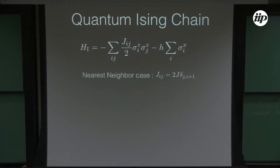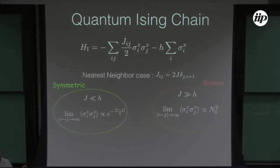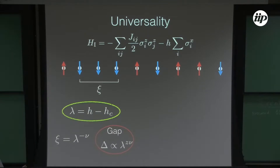The system I'm going to treat with this technique is the quantum Ising chain — a transverse-field Ising model with quantum spins, which is a Pauli matrix. It has two phases: a symmetric phase with exponential correlations where the interaction is weak with respect to the transverse field, and a broken phase when interactions are strong and you have a finite order parameter. This is the same model that Thomas treated in the first talk. I'm going to go beyond mean-field and try to refine the description of equilibrium universal properties. The universal properties are defined as the scaling of certain quantities close to the critical point, characterized by the control parameter H minus H_c.